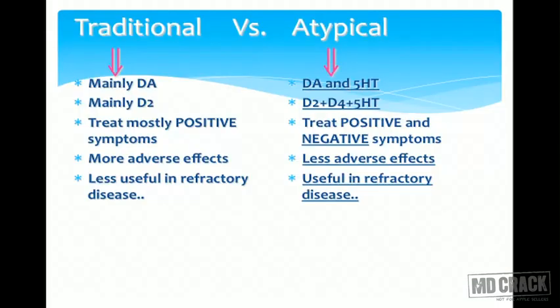Traditional antipsychotics act mainly on D2 dopaminergic receptors, while atypical agents act on D2, D4, and 5-HT receptors. Traditional agents treat mainly positive symptoms; atypical agents treat both positive and negative symptoms. Traditional agents have more adverse effects and are less useful in refractory cases, whereas atypical agents have fewer adverse effects and are also useful in treatment-resistant schizophrenia.